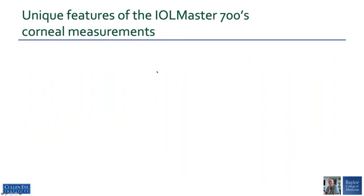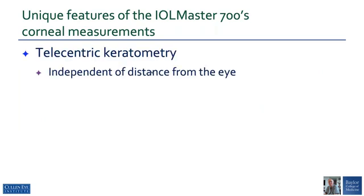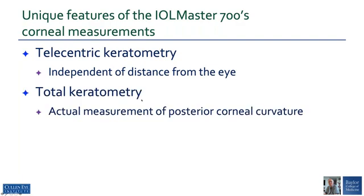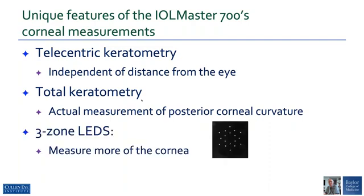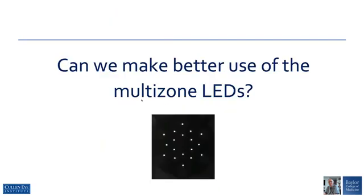The IOMaster 700 has three very unique features for its corneal measurements. The first is telecentric keratometry, in which corneal measurements are made independent of the distance from the eye. The second is total keratometry, which provides actual true measurement of the posterior corneal curvature with the swept-source OCT. The third is the use of three-zone LEDs that enable the device to measure more of the cornea, which raises the question: can we make better use of these multi-zone LEDs?